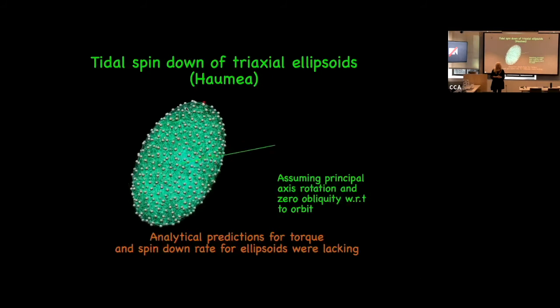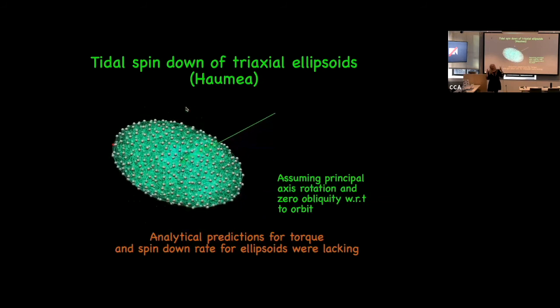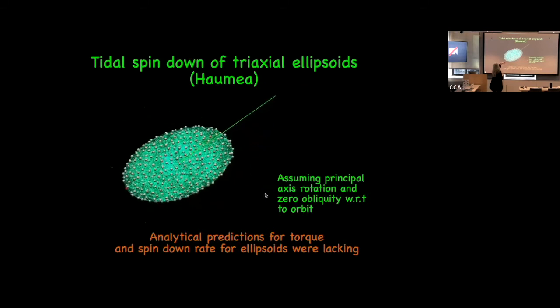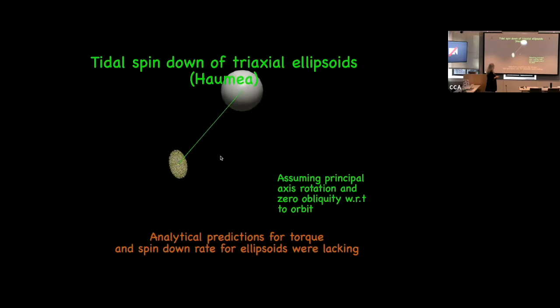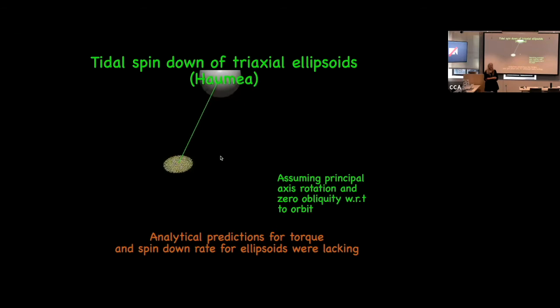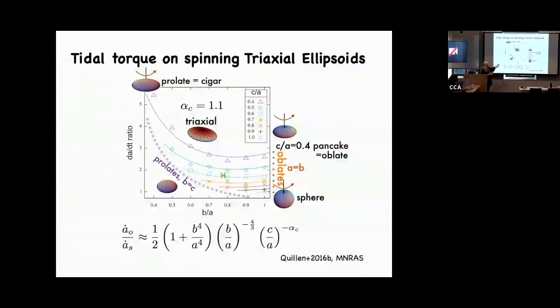The following year we did bigger bodies. This was inspired by a collaborator who asked about Haumea — a very elongated body. The question was: how does the tidal torque, averaged over the spin period, depend on body shape? This is hard to calculate analytically but easy to simulate because we don't care if our body is round. We simulated spinning spheres, oblates, and prolates, not tidally locked.